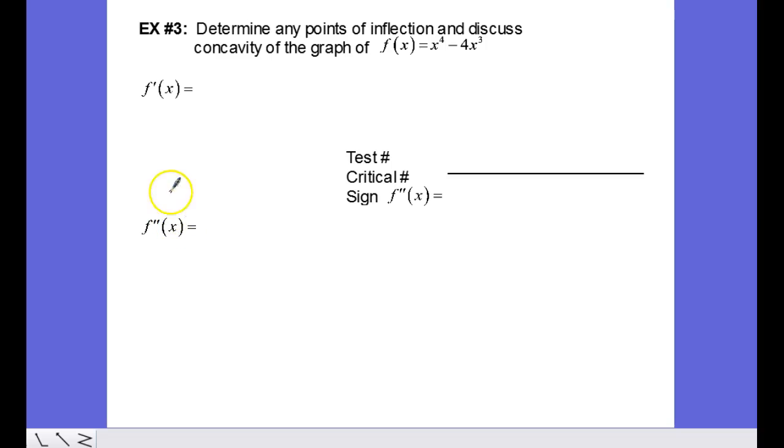We will then create a sign chart using the critical values for our second derivative, and then we will make some decisions about concavity and points of inflection. Let's start.